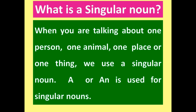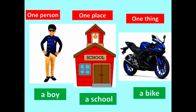What is a singular noun? When you are talking about one person, one animal, one place, or one thing, we use a singular noun. A or An is used for singular nouns. For example, you can see the picture of one person — a boy, one place — a school, one thing — a bike.